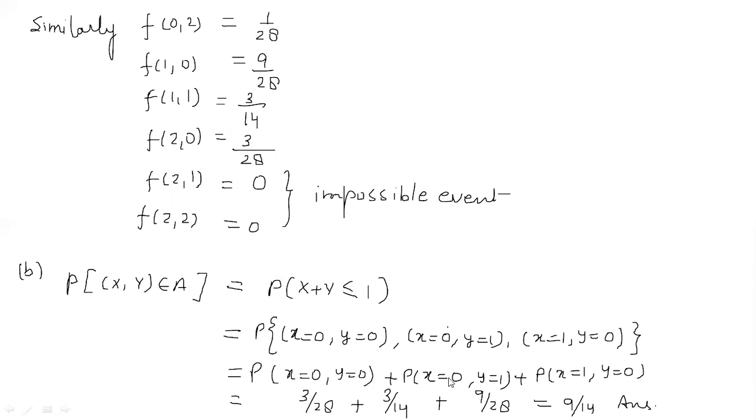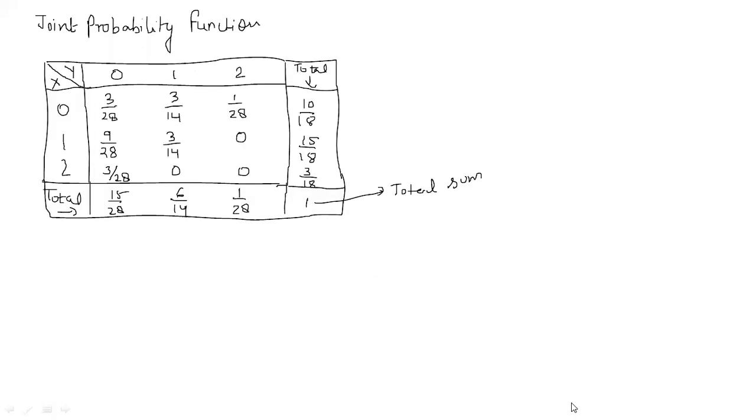To aap inki probabilities add kar dijiye. Kyunki inme se koi ek possible hai. Either this or this or this. So sum of all these is 9 upon 14.